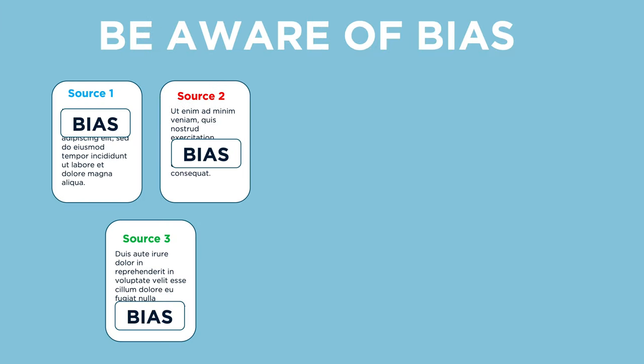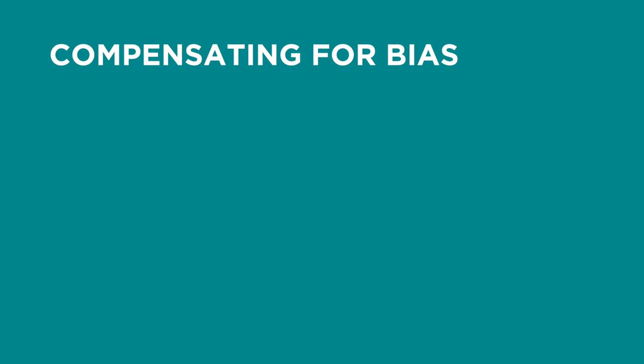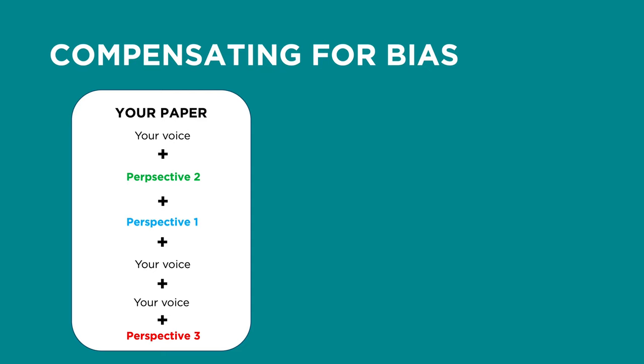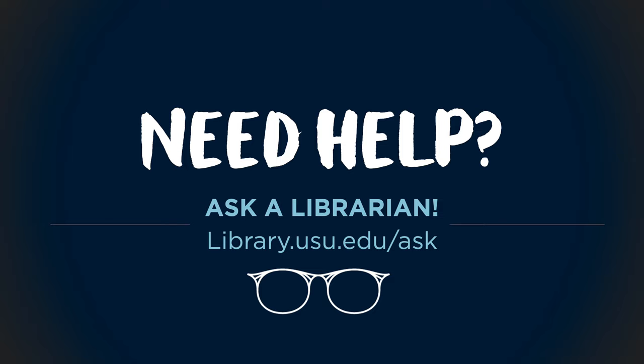If blatant bias is present in a source, it doesn't mean that you can't use it. But you need to be aware of the biases so you can compensate for it with other sources. Compensating for bias urges you to pull in multiple perspectives, which will help you create a well-rounded view. If you need help finding or using a variety of sources, you can always ask a librarian.